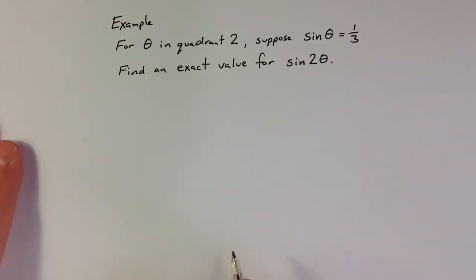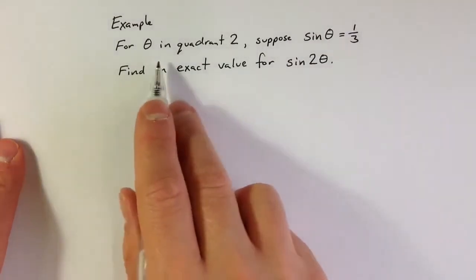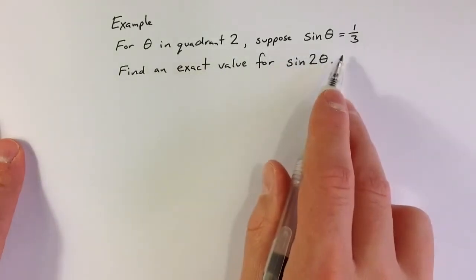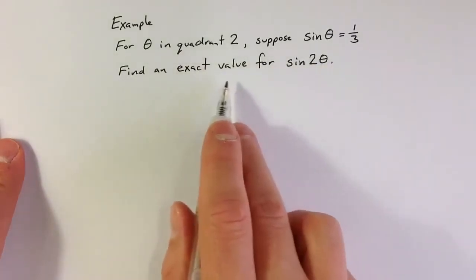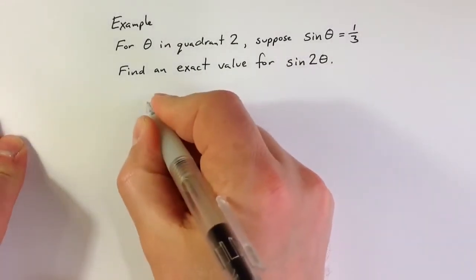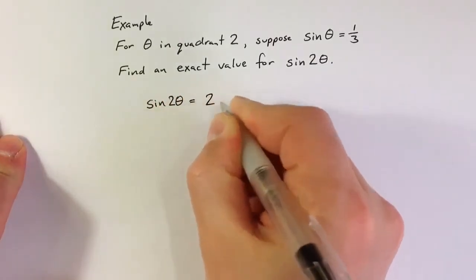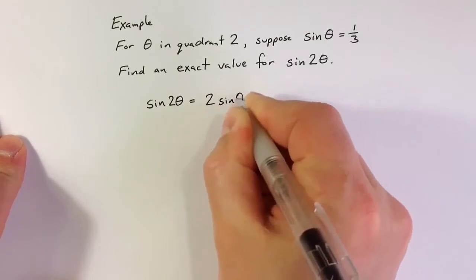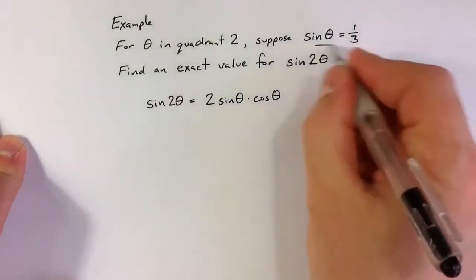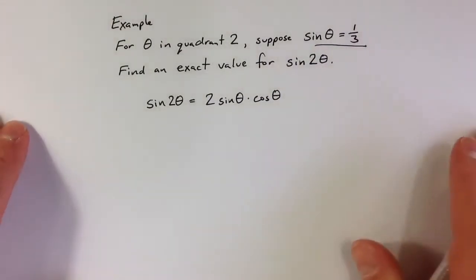Let's use the double angle identity for sine to answer the following question. Suppose theta is an angle in the second quadrant and sine of theta is 1 third. We'd like to find an exact value for sine of 2 theta. From the double angle identity, sine of 2 theta equals 2 times sine of theta times cosine of theta. We have a value for sine of theta, so we need to find cosine of theta.